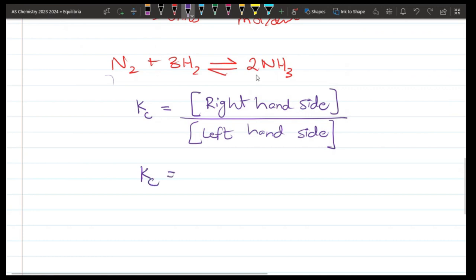Right hand side is ammonia NH₃ in square brackets. Left hand side is N₂ in square brackets times H₂ in square brackets. The coefficients become powers: there is 2NH₃, so squared, and 3H₂, so the 3 becomes the power.